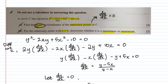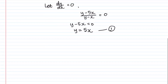The question asks for the exact x-coordinates of the stationary points. Now that we have y = 5x as Equation 1, and the original curve equation as Equation 2, we solve simultaneously. Substituting y = 5x into the original curve means replacing all y values — this will let us find the exact x-coordinates.